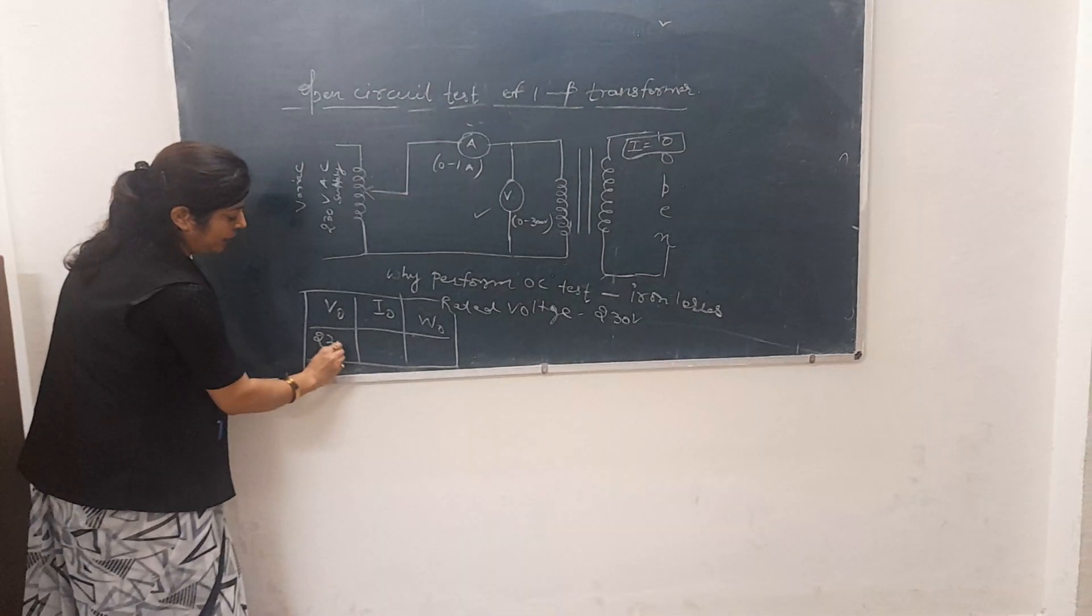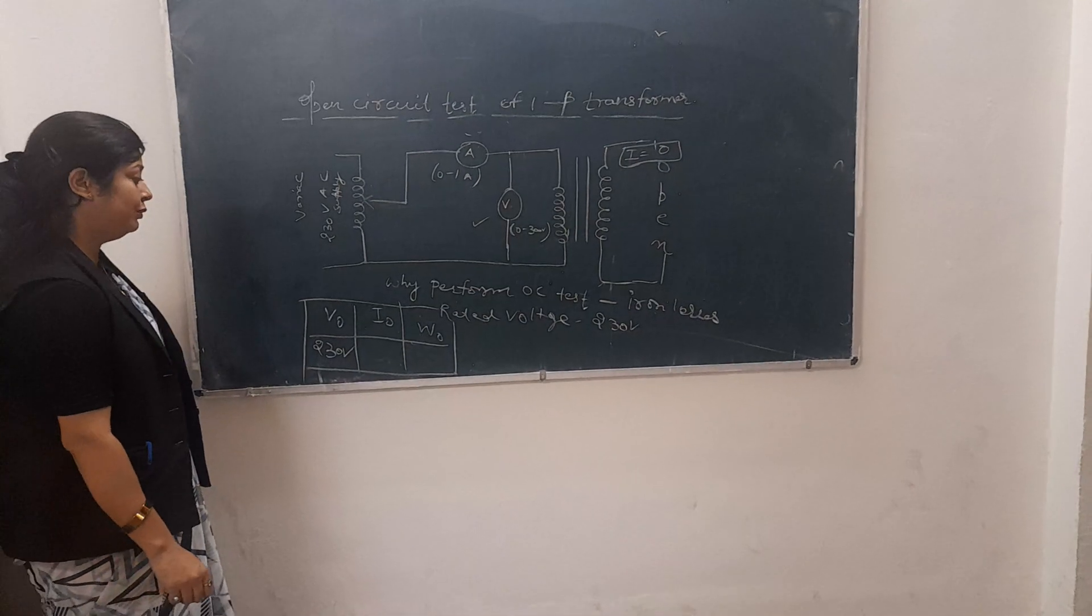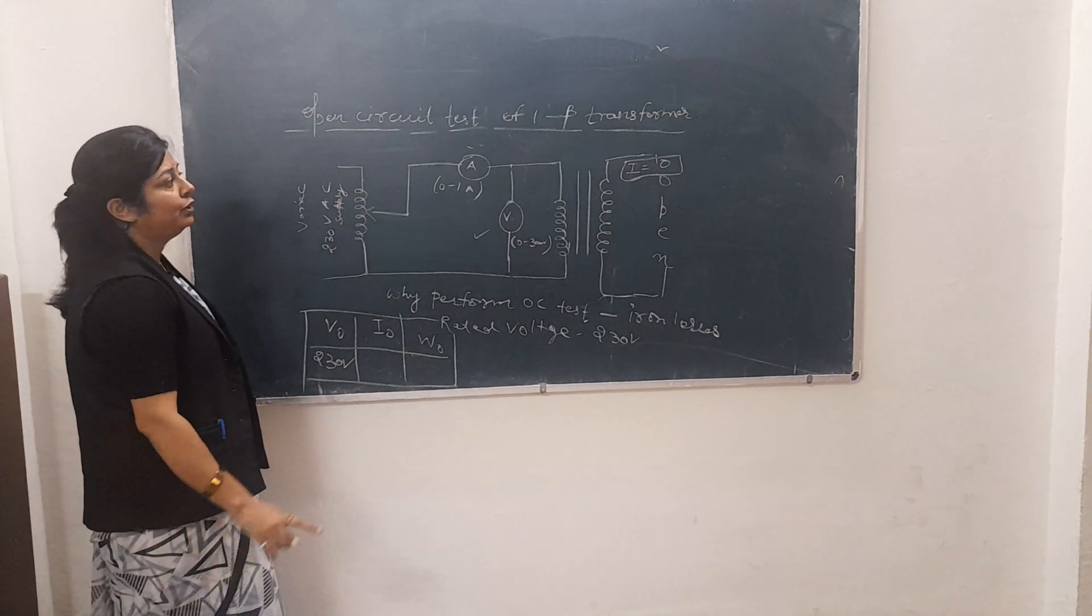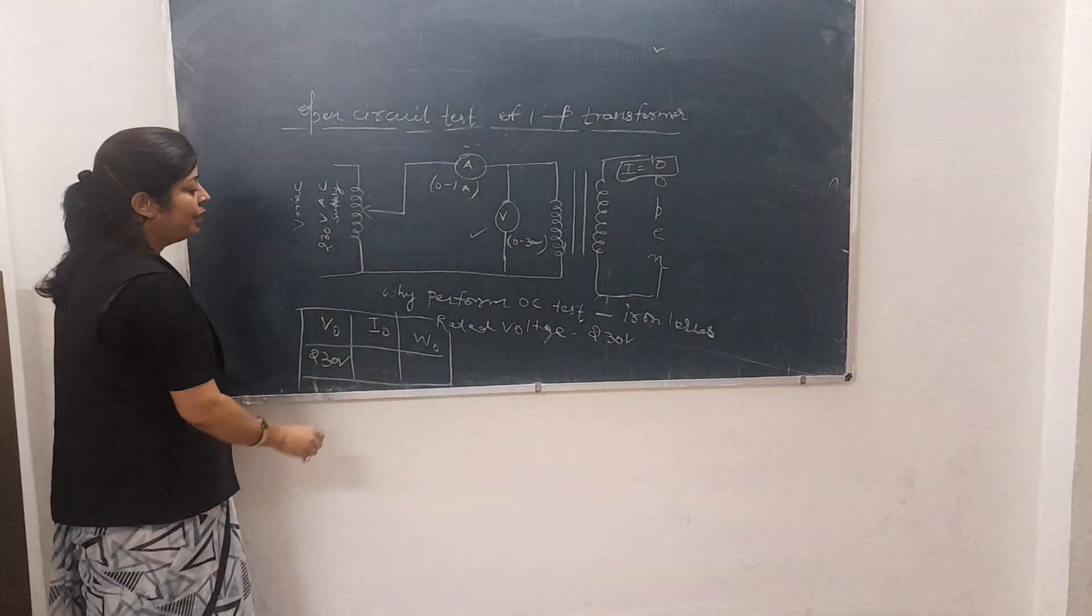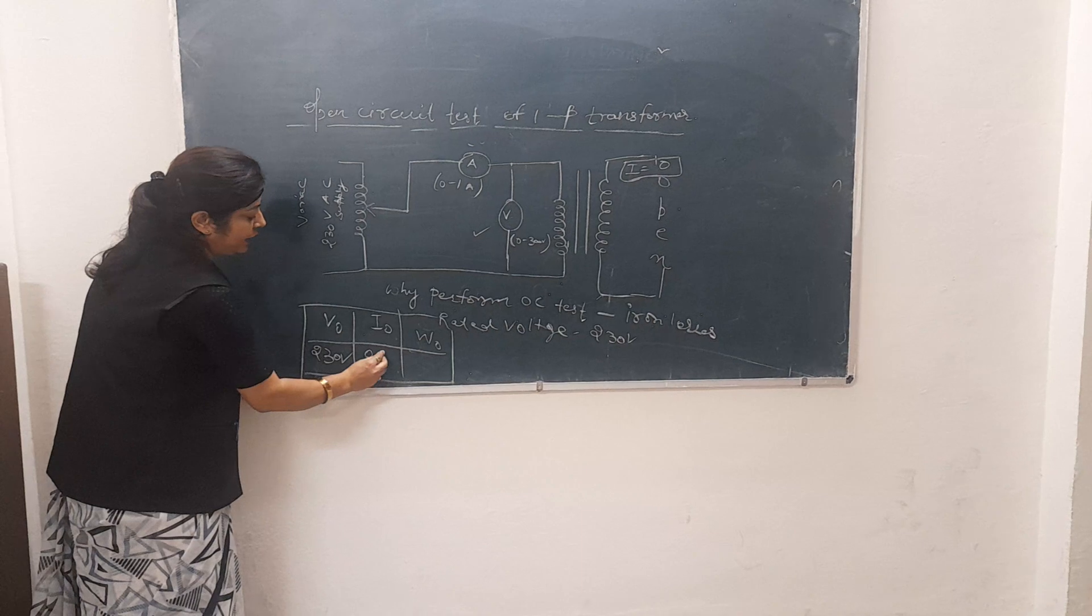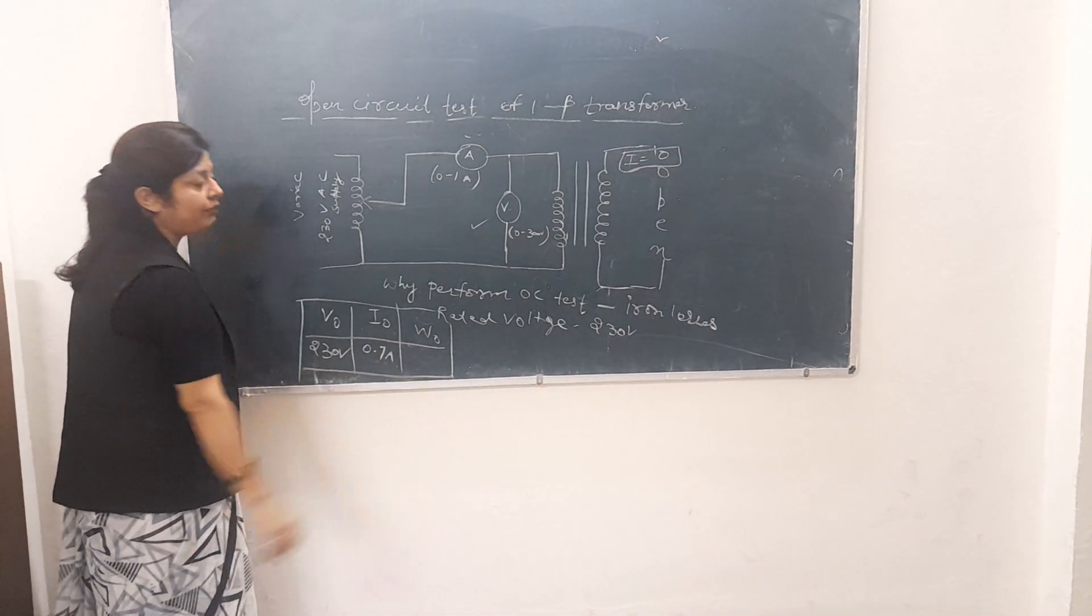Now, when the secondary winding is open, the current will be zero, and then you will check the readings. The no-load current will typically be a small percentage of rated current.